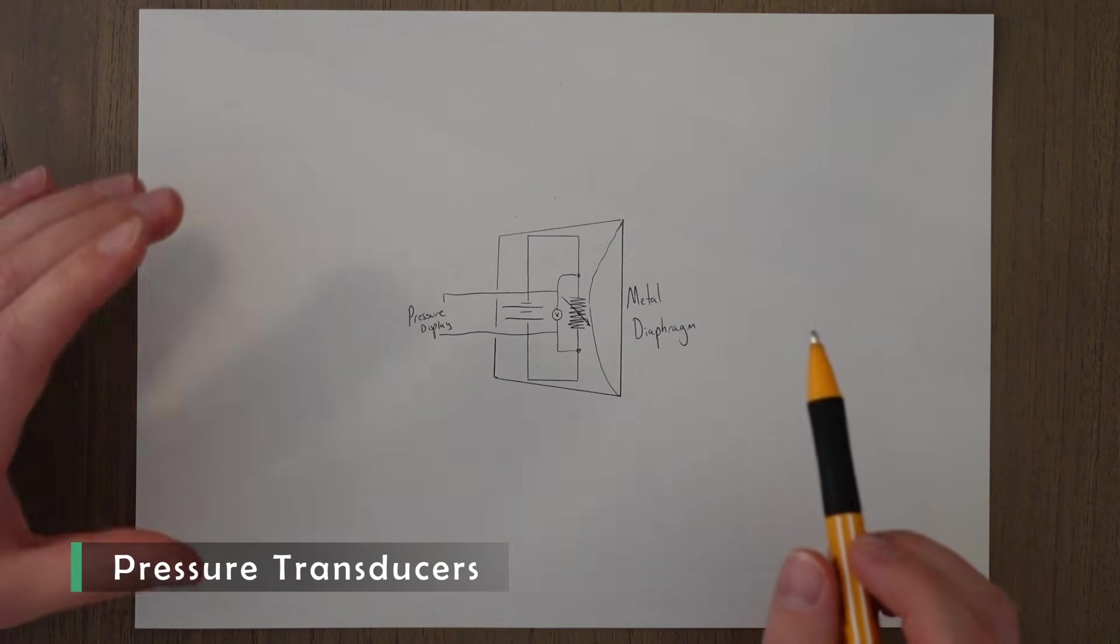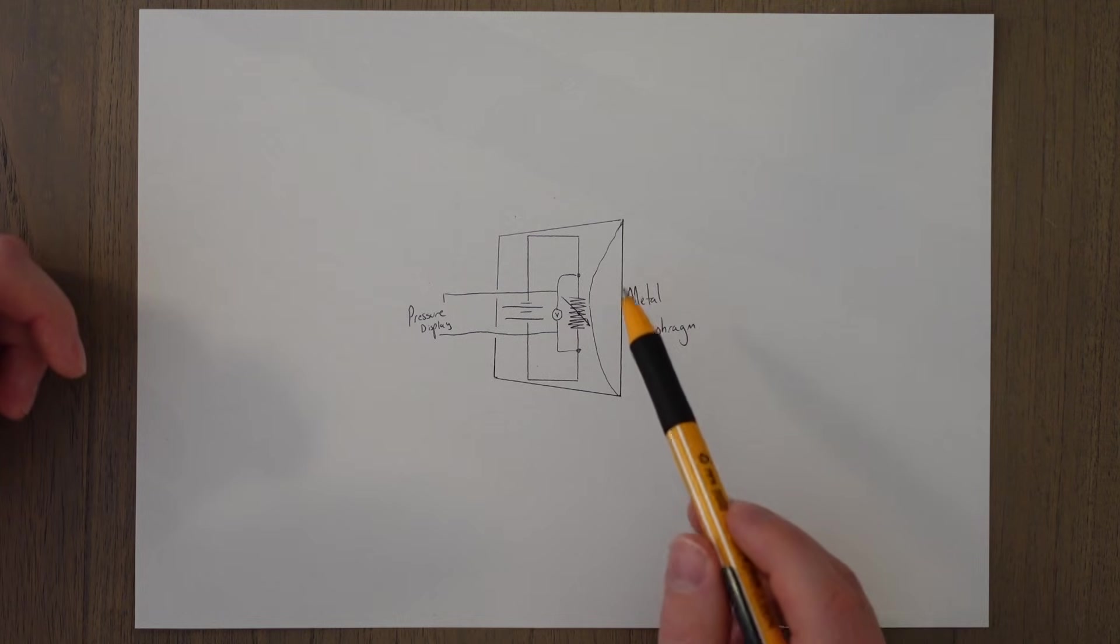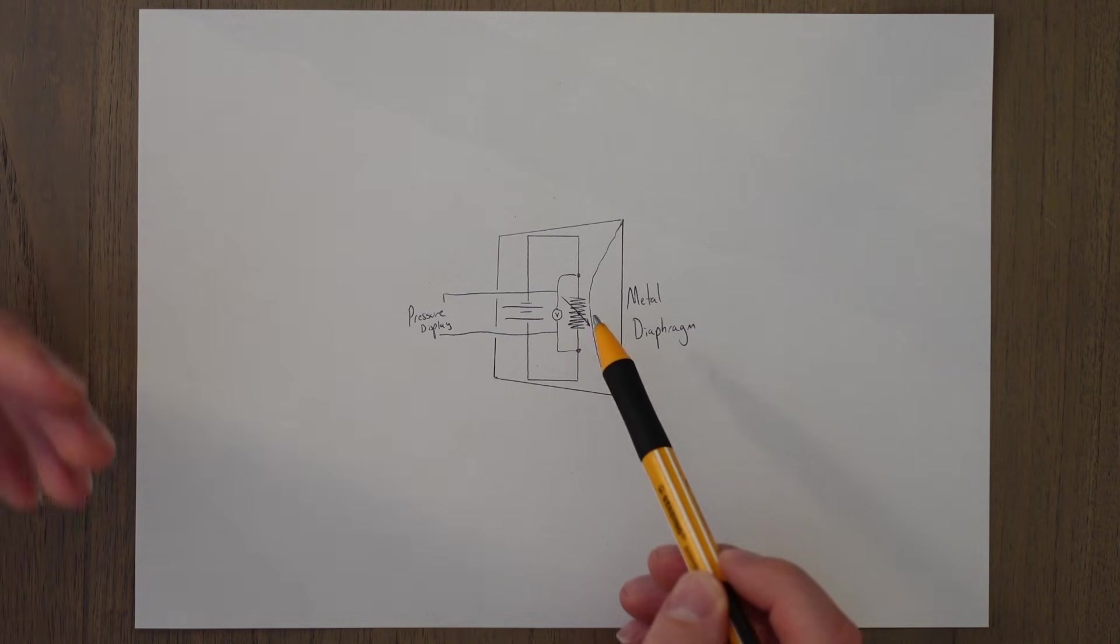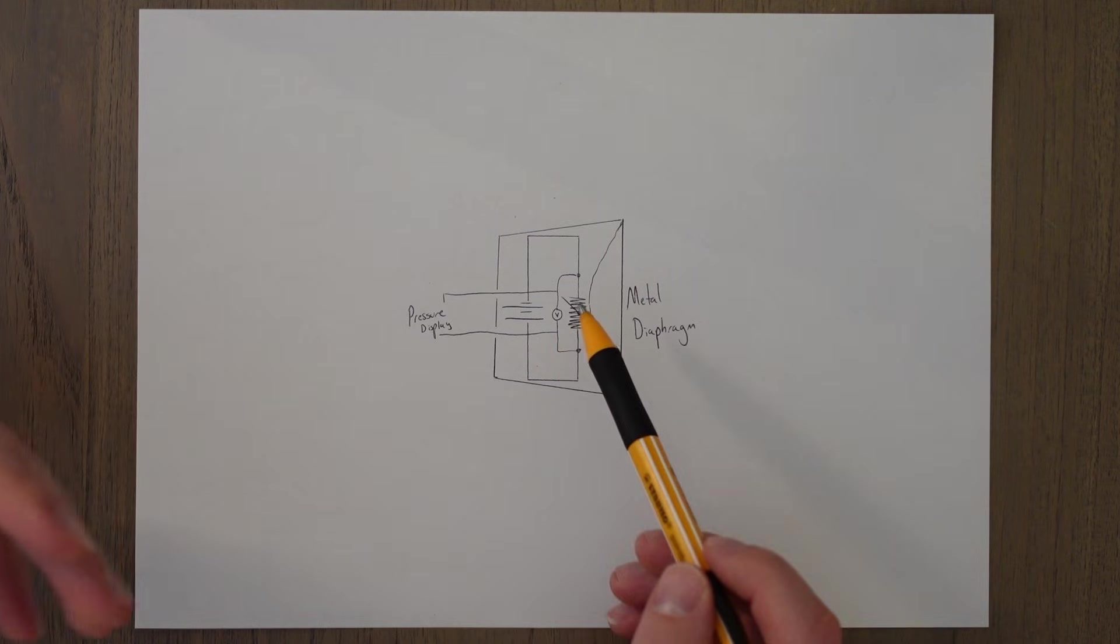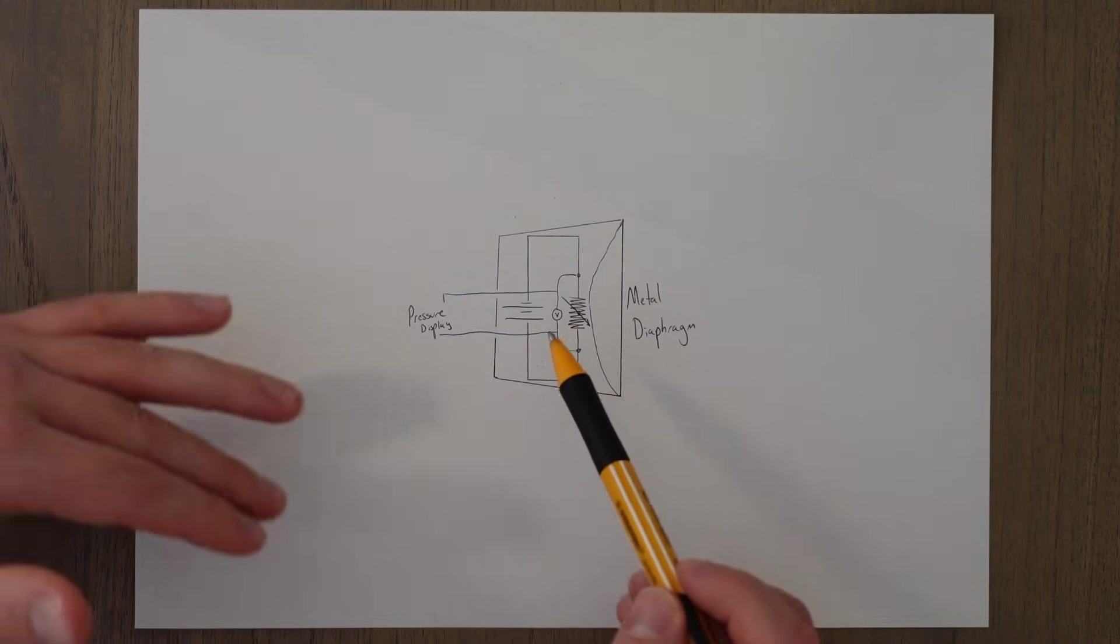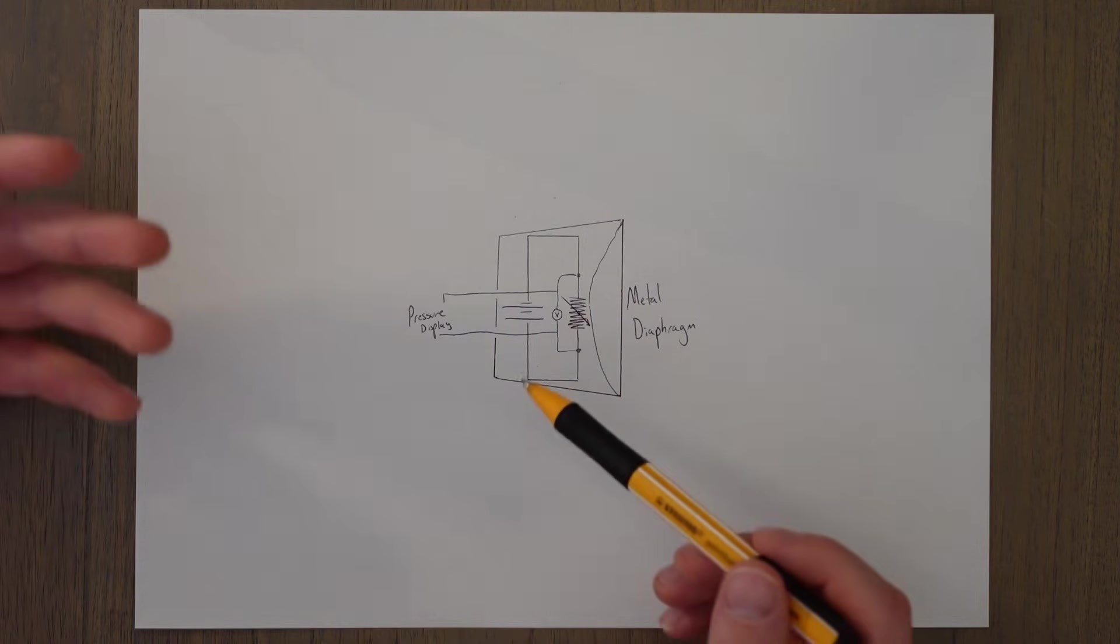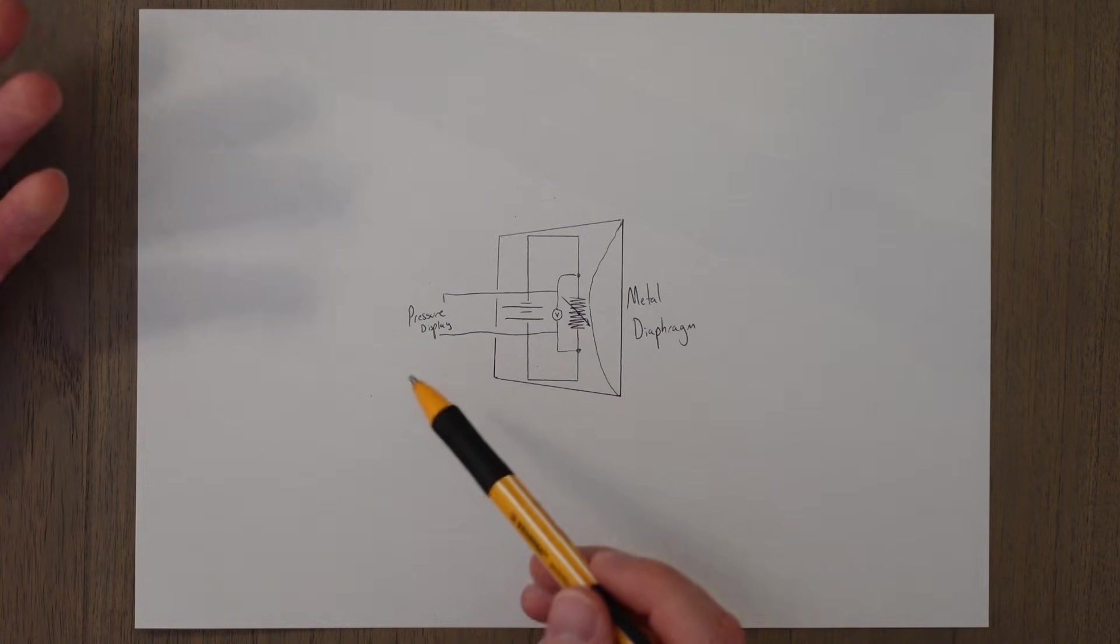Pressure transducers are basically small electric diaphragms. A small metal diaphragm deforms, and the metal moving presses on a resistive element that will change its resistance depending on the pressure that's put on it. There's electricity flowing through the resistive element, so when it changes, the voltage across it changes, which can then be measured and translated into a pressure reading and sent to a dial or a digital display.